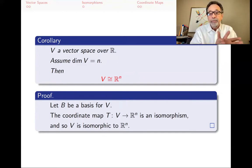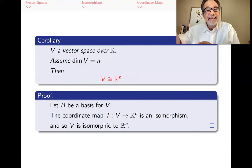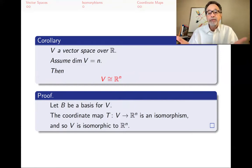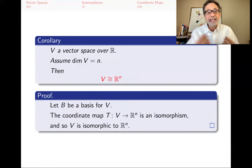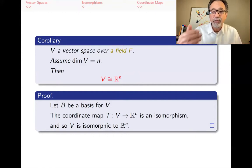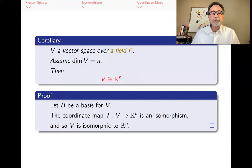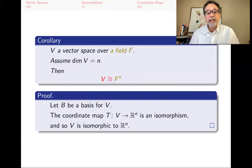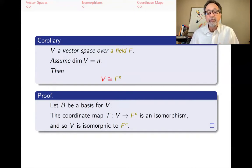If the vector space is over a field F — meaning the scalars come from some other field — then the vector space would not be isomorphic to Rn, but to Fn. The proof is the same: the coordinate map from V to Fn is an isomorphism, making V isomorphic to Fn.